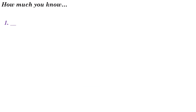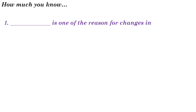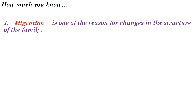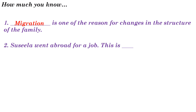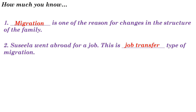Now check how much you know. First question: Dash is one of the reasons for changing the structure of a family. Answer: Migration. Second question: Susina went abroad for a job — this is what type of migration? Answer: Job transfer migration, that is, economic migration.